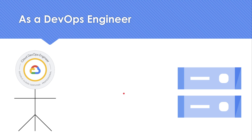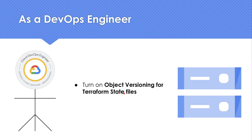As a DevOps engineer, the main best practice with respect to Google Cloud Storage is related to Terraform. Terraform has a state file, and a Google Cloud Storage bucket is a very good choice to keep that state file. Since the state may change regularly, turning on object versioning is a very good choice — so if something goes wrong, you will be able to restore back. It is also recommended to turn on object lifecycle management on top of versioning, though it's not mandatory. The state files are going to be very small in size, but versioning ensures recoverability.